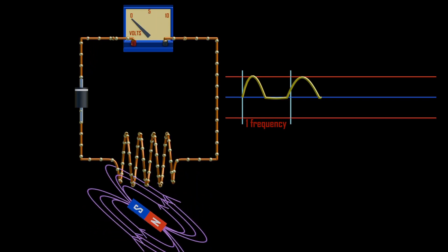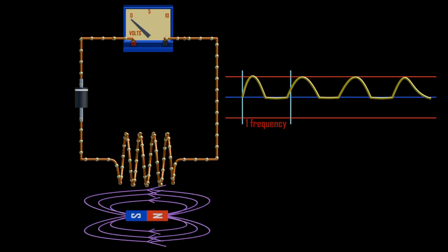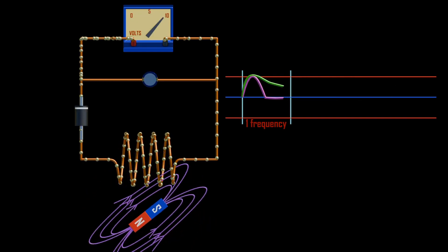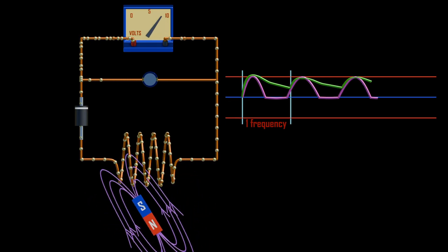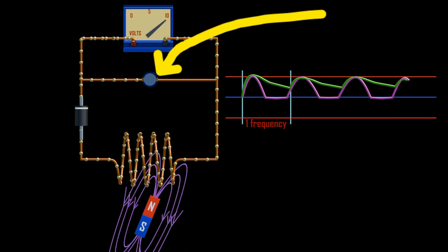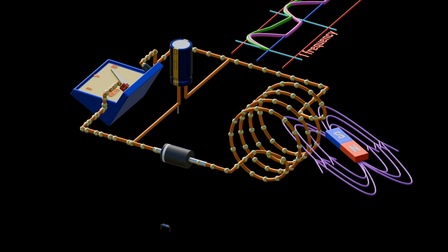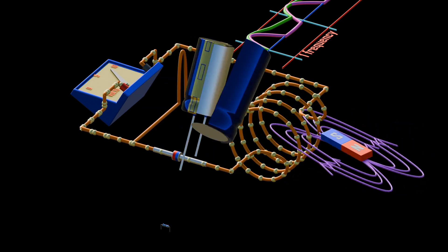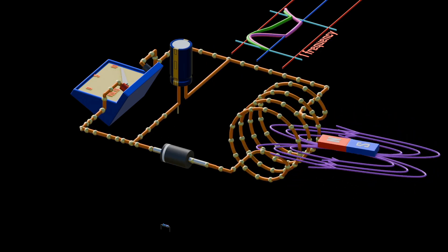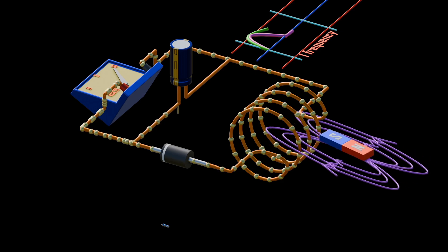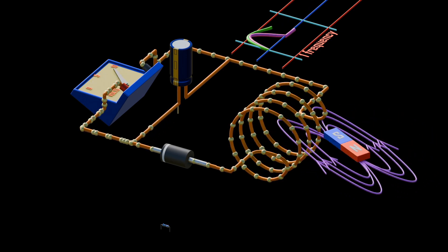While the output of a rectifier is a pulsating DC, most electronic circuits require a substantially pure DC for proper operation. The pure DC output can be provided by a single or multi-section filter circuit placed between the output of the rectifier and the load — for example, using a capacitor as a filter. The ripples will be reduced. Capacitors have the ability to store charges and release them to the load. In general, filtering uses capacitors, inductors, and resistors. Capacitors are used as shunt elements to bypass the alternating current around the load.